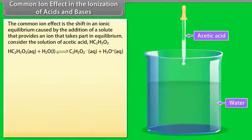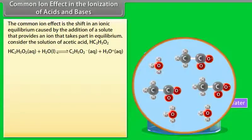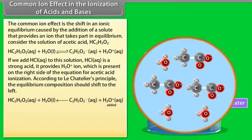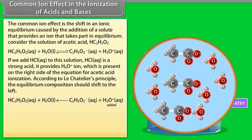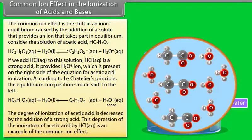The common ion effect is the shift in an ionic equilibrium caused by the addition of a solute that provides an ion already taking part in the equilibrium. Consider acetic acid (HC₂H₃O₂): if we add HCl(aq), a strong acid, it provides H₃O⁺ ions present on the right side of the acetic acid ionization equation. According to Le Chatelier's principle, the equilibrium shifts to the left, decreasing the degree of ionization of acetic acid. This depression of ionization by HCl is an example of the common ion effect.